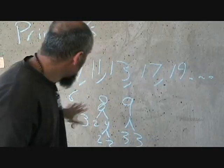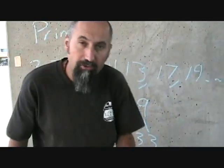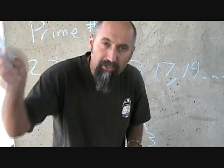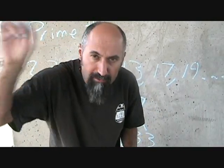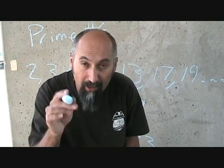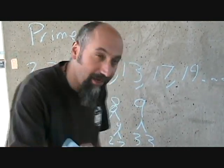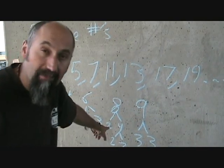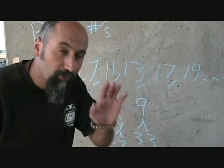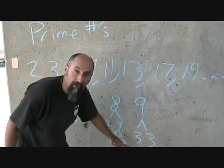This becomes super important — breaking down numbers to their prime numbers — when you're dealing with fractions. What you do is start canceling off the prime numbers from the top and the bottom. We'll talk about that when we deal with fractions. I'm going to put some exercises on my website where I'll ask you to break down numbers into their prime numbers — go through those exercises.